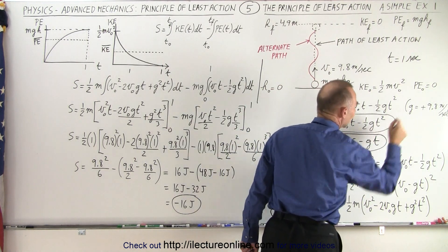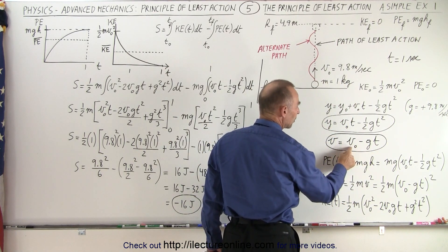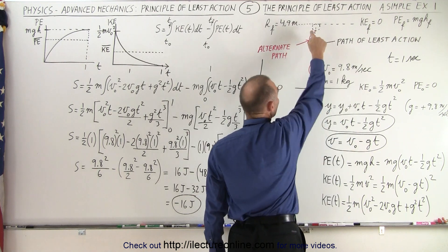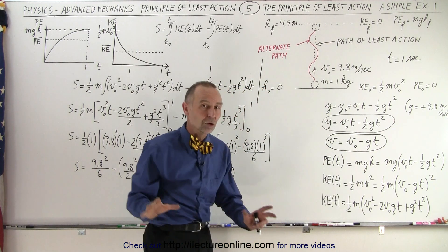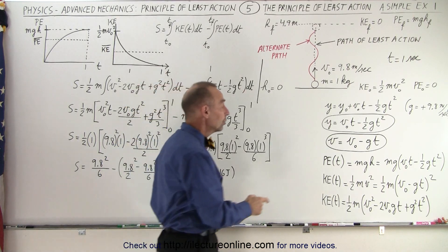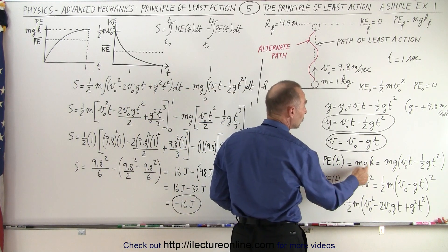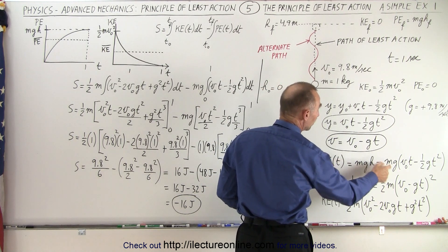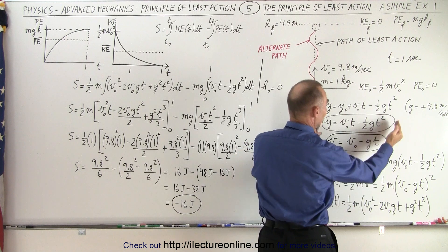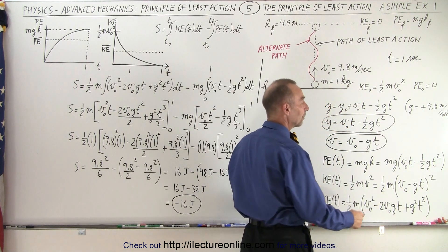Notice again g is a positive 9.8. After one second, the initial velocity at 9.8 minus 9.8 times one goes to zero, which means it has zero velocity at the highest point — so you can quickly check that those equations work. The potential energy as a function of time is equal to mgh, where the height is replaced by the kinematic equation, giving mg times the height as a function of time.